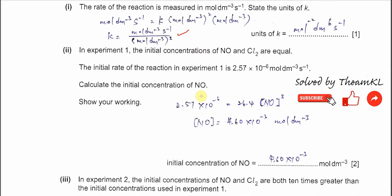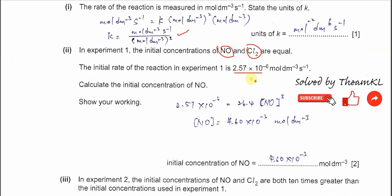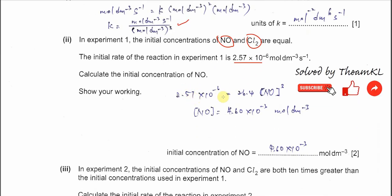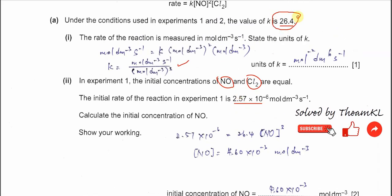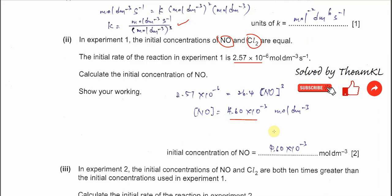Part 2. In experiment 1, the initial concentrations of NO and chlorine are equal. The initial rate of reaction in experiment 1 is 2.57 × 10⁻⁶ mol dm⁻³ s⁻¹. Calculate the initial concentration of NO. Since NO and chlorine have the same concentration, we substitute into the rate equation using [NO]³. Rearranging, you get 4.60 × 10⁻³ mol dm⁻³ as the initial concentration of NO in experiment 1.